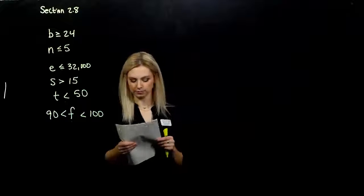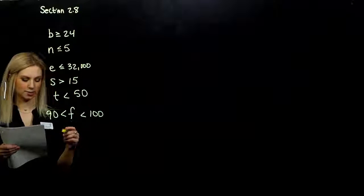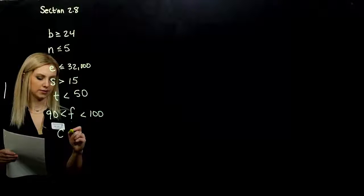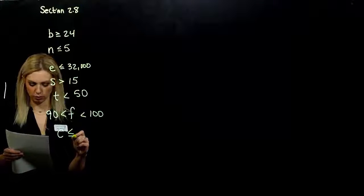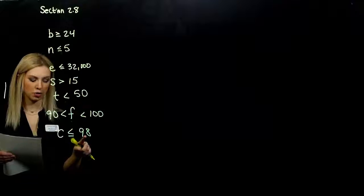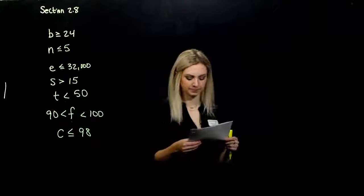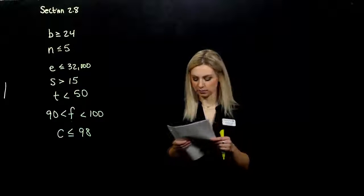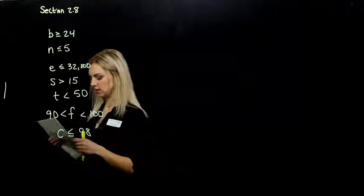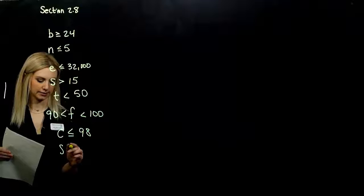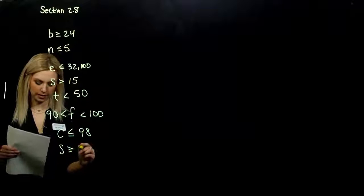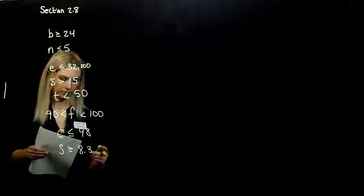No more than. So Cooper weighs no more than 98 pounds. Cooper, if I let him be C, he's less than or equal to 98. Because he weighs no more than 98, but he could weigh less than. No less than. Sophia scores no less than 8.3. So she has to get greater than or exactly equal to 8.3 for her score.